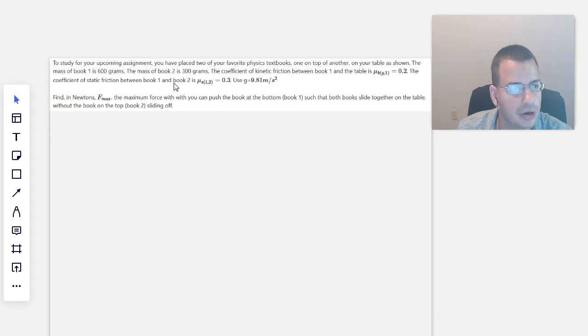Coefficient of static friction between book 1 and book 2 is 0.3. They have 1 and 2 because it's the friction between book 1 and 2. It makes sense because usually static is bigger than kinetic for similar materials. Use 9.81 meters per second squared for g. Find, in Newtons, F_max - the maximum force with which you can push the book at the bottom, book 1, such that the books slide together on the table without the book on the top, book 2, sliding off.